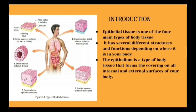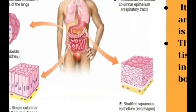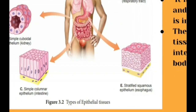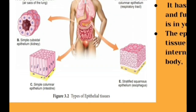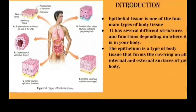Epithelium is a type of body tissue that forms the covering on all internal as well as external surfaces of your body. It has several different structures and functions depending on where exactly it is placed. Here you can see pseudo-stratified ciliated columnar epithelium in the respiratory tract, simple squamous epithelium in the air sacs of the lung, simple cuboidal epithelium in the kidneys, simple columnar in the intestine, and stratified squamous epithelium in the esophagus.